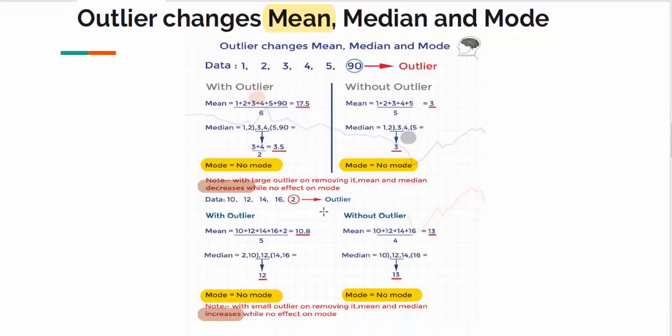Similarly, if we carry the same experiment with the small dataset, we could see that when outlier is removed, mean and median increase, whereas mode has no impact.